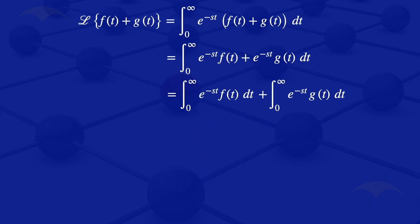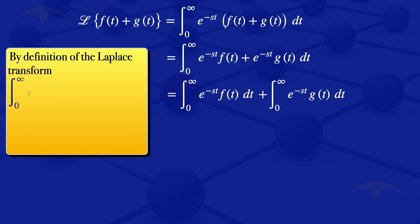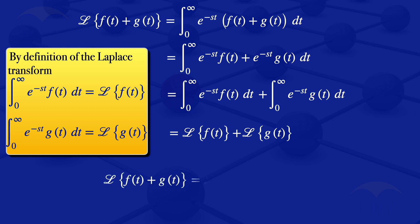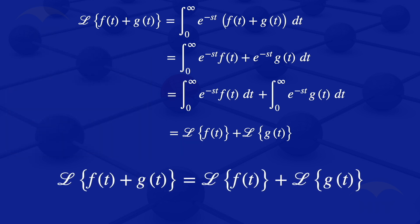Looking at those two integrals, we can use the definition of the Laplace transform. The integral from zero to infinity of e to the minus ST times F of T dT is the Laplace transform of F of T, and the integral from zero to infinity of e to the minus ST times G of T dT is the Laplace transform of G of T. Substituting, we have the Laplace transform of F of T plus the Laplace transform of G of T. Therefore, the Laplace transform of F of T plus G of T equals the Laplace transform of F of T plus the Laplace transform of G of T, which is what we were required to prove.